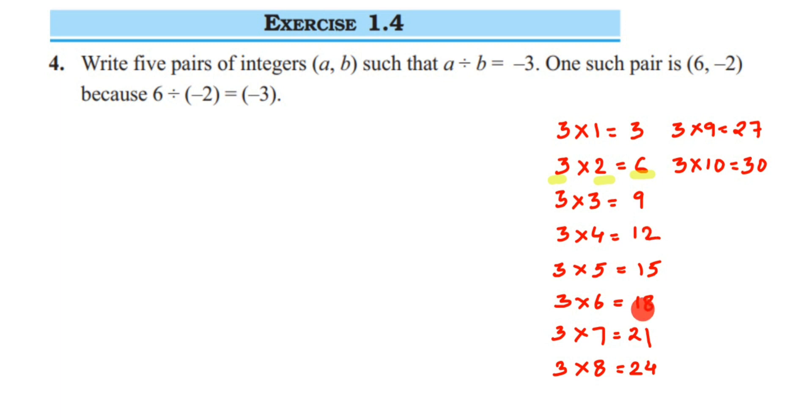From the 3 table, you can take any 5 pairs. The only thing is you have to make sure about the sign. Because there's one negative sign, you can put it either on the dividend or the divisor—any one number you have to choose and put the negative sign.